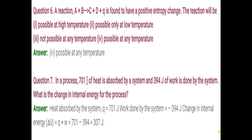Question number 6: a reaction A plus B gives C plus D is found to have a positive entropy change. The reaction will be possible at any temperature. Because here value of entropy is positive — entropy is degree of randomness, and randomness is increasing. If movement of reactant particles is more, they will react easily and form product easily. If there is an increase in entropy value, that reaction will be possible at any temperature.